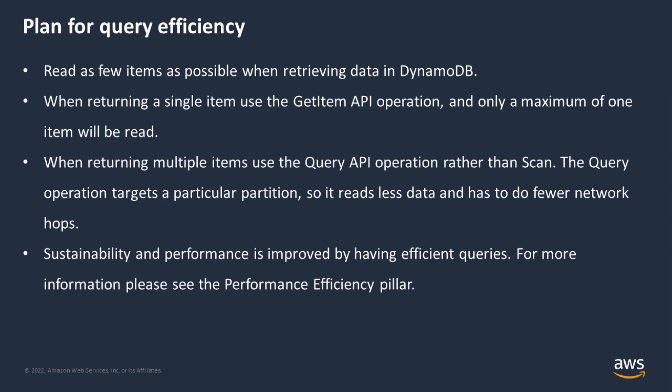A key design goal for DynamoDB is to minimize the need for complex compute at runtime. Instead, we store data in a shape that's easily retrieved without the need for complex aggregation operations. If we only need to read one item, such as a key-value lookup, then the GetItem API operation makes the most sense. This will read a maximum of one item, so the impact for CPU and disk IO behind the scenes is low. If we need to read multiple items, we have a choice: we can either use Query, Scan, or BatchGetItem.